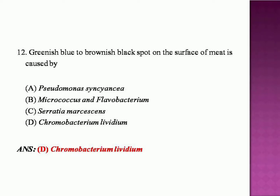Greenish-blue to brownish-black spots on the surface of meat are caused by: Pseudomonas cincinia, Micrococcus and Flavobacterium, Serratia marcescens, or Chromobacterium lividum? The answer is Chromobacterium lividum.